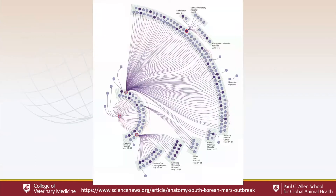This is brilliantly illustrated by a transmission network diagram by Maya Majumder and colleagues, where any cases arising in green fans are cases that took place in healthcare settings. You have an initial index case, then a hospital-acquired outbreak in that hospital, which propagates to a number of other hospitals. The outbreak is almost entirely fueled by patient transfers, hospital shopping, and failures in infection control — essentially an epidemic that is almost completely nosocomial.